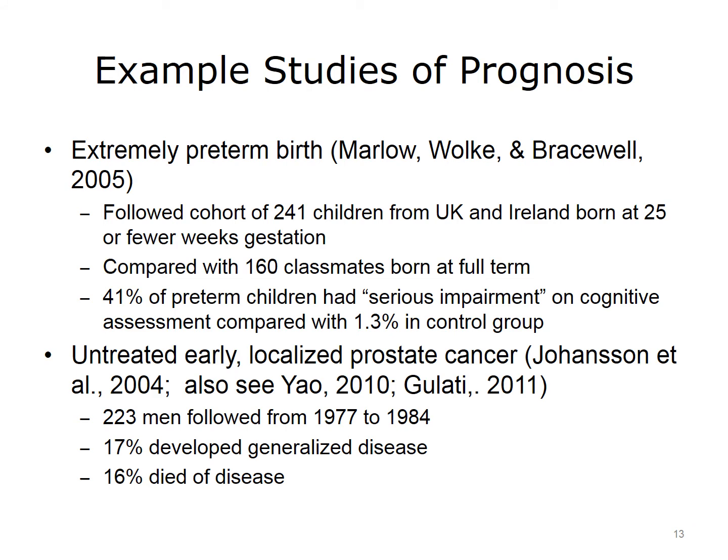Here are some example studies. Several prognosis studies have looked at children who were extremely preterm, had extremely low birth weight, and were in neonatal intensive care units. There are a number of ethical and philosophical issues about how much intervention is desirable for these extremely small children, and a prognosis study gives us an indication of how they do, especially six years out. A 2005 study followed a cohort of 241 children from the United Kingdom and Ireland who were born at 25 or fewer weeks gestation. They were compared with classmates who were born at full term. 41% of the preterm children had serious impairment on a variety of cognitive tests compared with 1.3% of their full-term classmates.